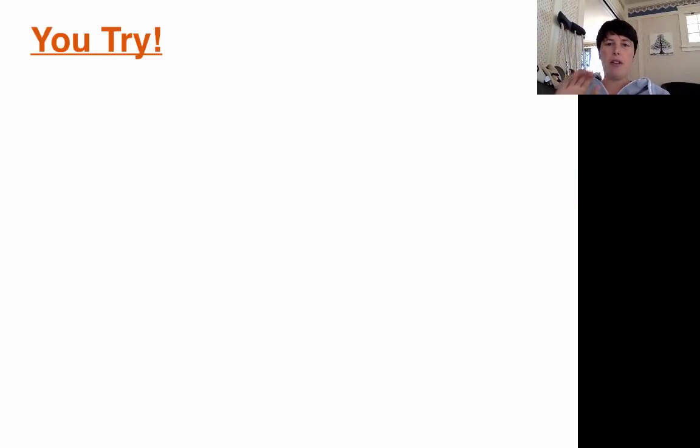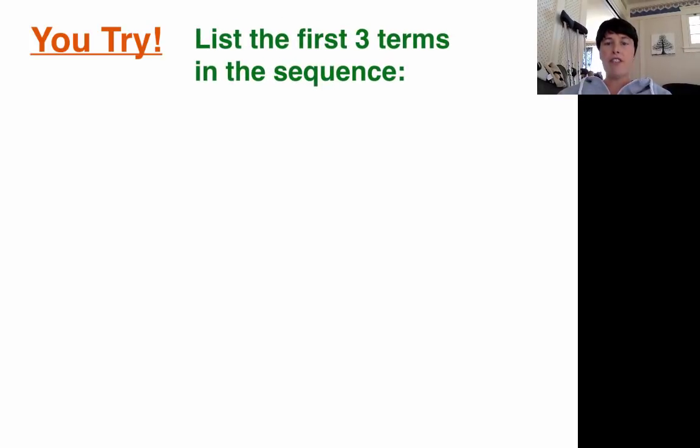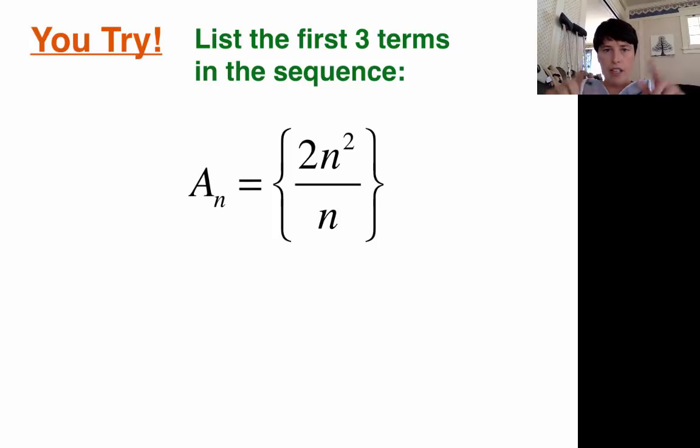Okay. You've got three examples now. So I think you should try. Here's your you try problem. List the first three terms in the sequence. And I'm going to give you a little bit more of a complicated sequence to kind of challenge you. A sub n equals, brace, 2n squared over n. There's your equation: 2n squared over n.